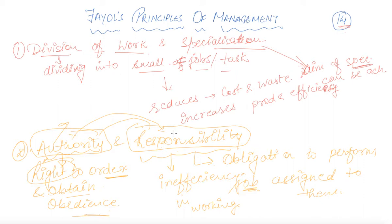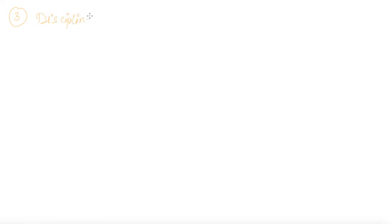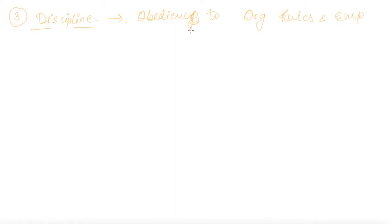The same amount of authority and responsibility should be given — this is the second principle. The third principle provided by Henri Fayol is Discipline. We all know the meaning of discipline: obedience to rules and regulations. In the context of an organization, discipline refers to obedience toward organizational rules and employment agreements which are necessary for the working of the organization.